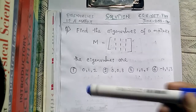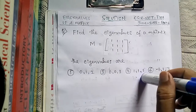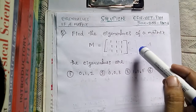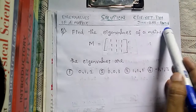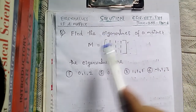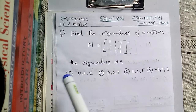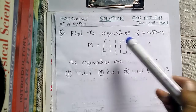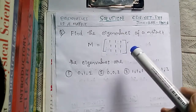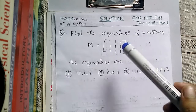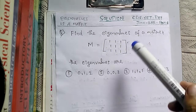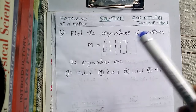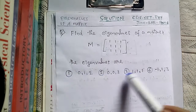Hey friends, this is Vidhan. Welcome to my channel. Today we will solve a problem of eigenvalues of a matrix. It's from June 2011 Part B — find the eigenvalues of the given matrix. It's a square matrix of order 3×3, meaning the number of rows equals the number of columns, so it will have 3 eigenvalues, which is why each option contains 3 eigenvalues.